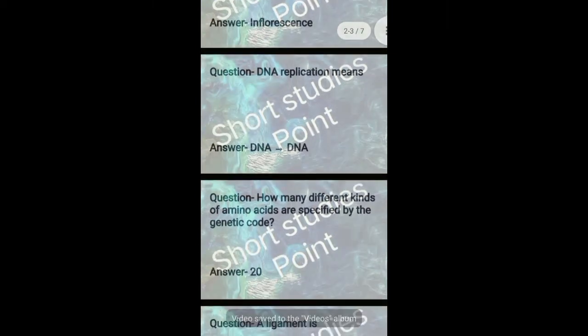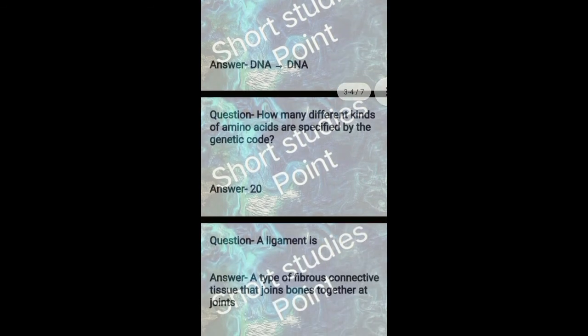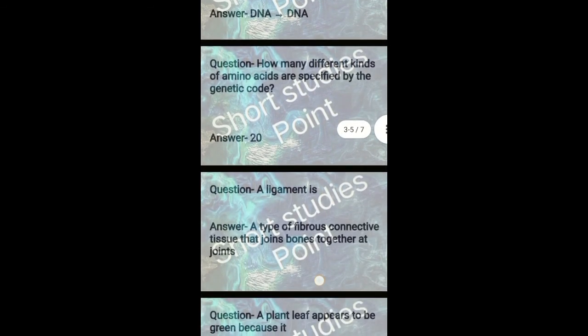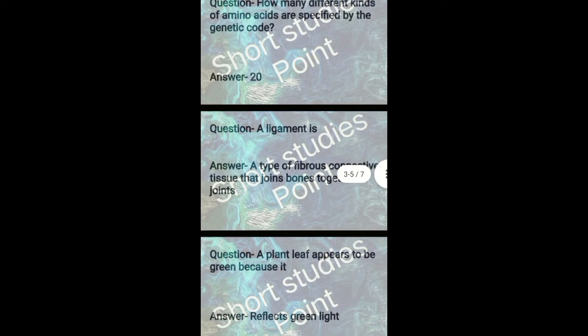Question: How many different kinds of amino acids are specified by the genetic code? Answer: 20. Next question: A ligament is? Answer: A type of fibrous connective tissue that joins bones together at joints.